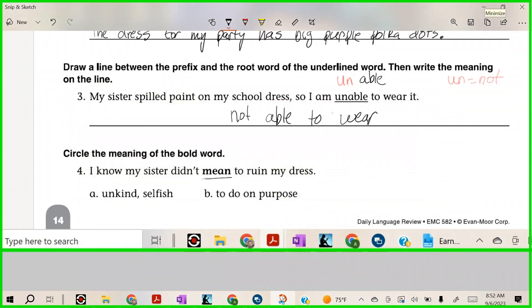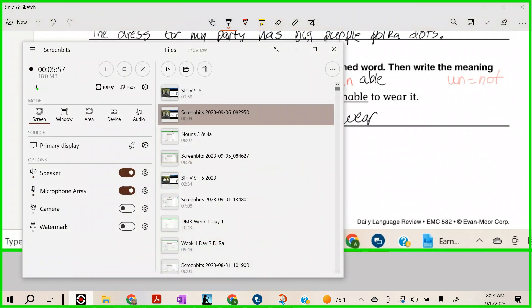Now when we look at it in context, take a look. 'I know my sister didn't mean to ruin my dress.' Does 'mean' in this instance mean unkind or selfish? How do you know? Because of all the context it's surrounded by. In this instance, she didn't do it on purpose. Week 2 Day 2 DLR in the books, to DaRo out.